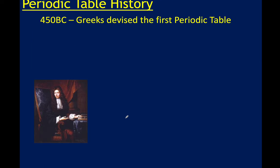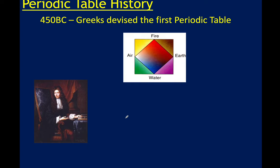Where do we start? We start with the idea that the Greeks in their togas came up with what made up everything they could observe, and it was as simple as air, fire, earth, and water. We then have to wait until the 1600s to get to Sir Robert Boyle.